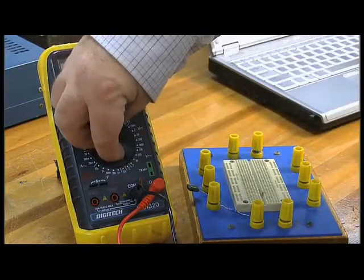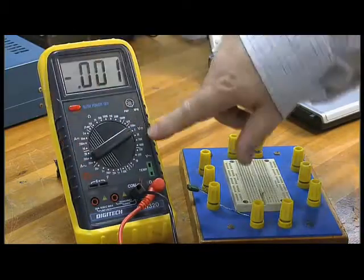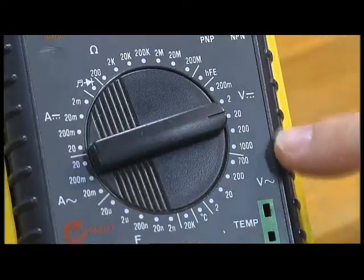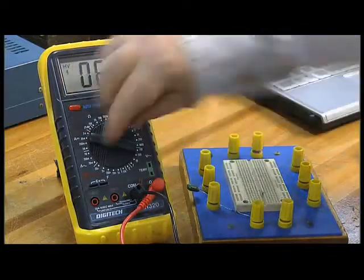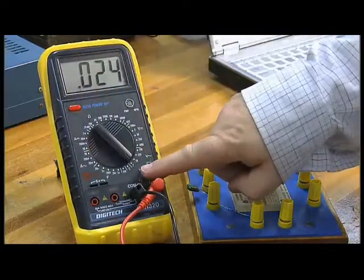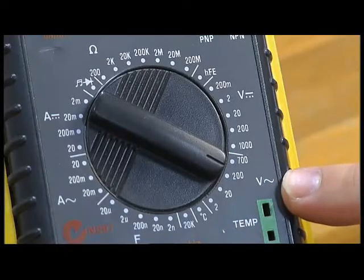And then if we want to do the same with voltage, we have the DC volt scale. Over here goes from 200 millivolts all the way up to 1000 volts DC. And then for AC it goes from 2 volts AC all the way up to 700 volts AC.